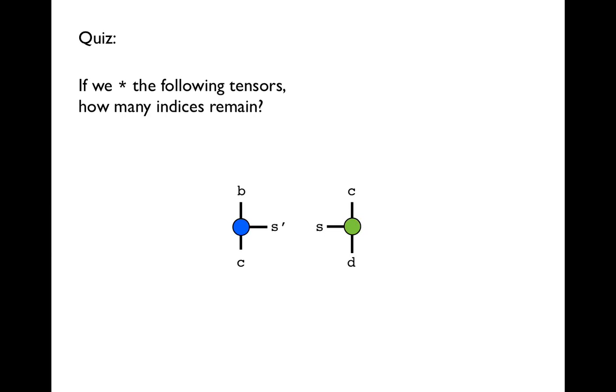In this example, the only index that matches is c from the left tensor with c on the right tensor. s prime, s, b, and d will remain uncontracted, so the result will be a rank four tensor. Thanks for watching.